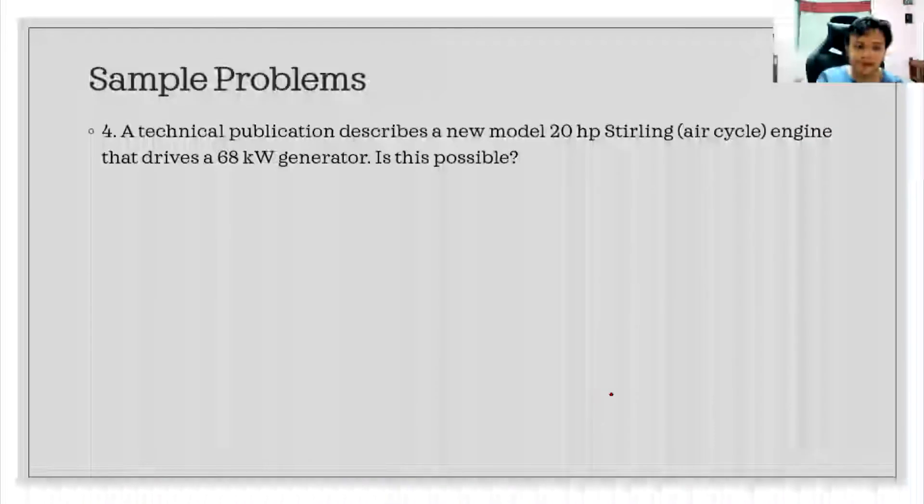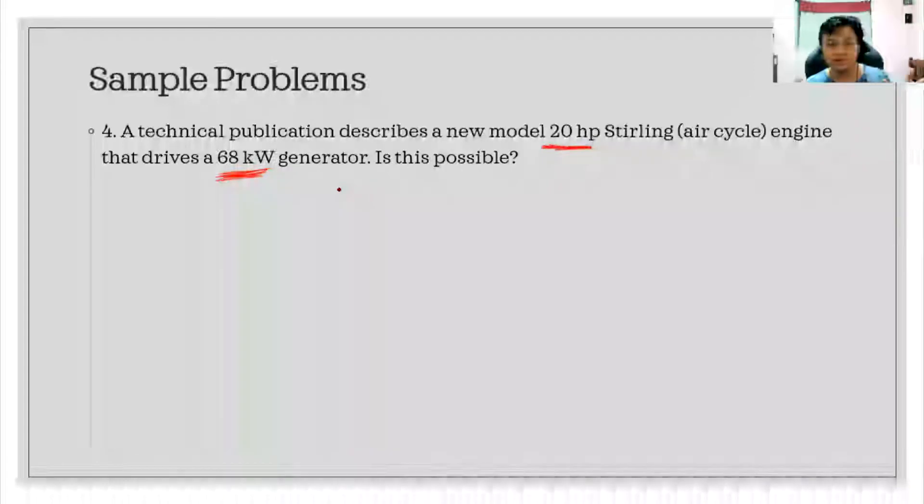Let's move on. We have a problem solving also here so that it will not be as boring. For you to give you a little challenge, we'll solve a problem. It says here: a technical publication describes a new model 20 horsepower Stirling air cycle engine that drives a 68 kilowatt generator. Is this possible? We are asked if this 20 HP is equivalent to the 68 kilowatt generator. Can it supply 68 kilowatts?